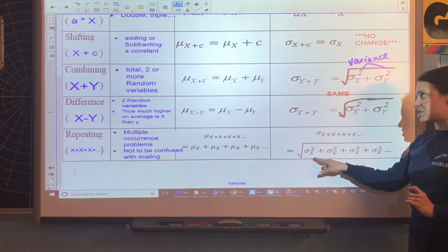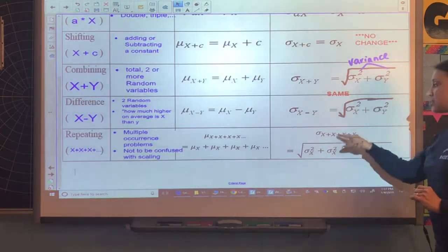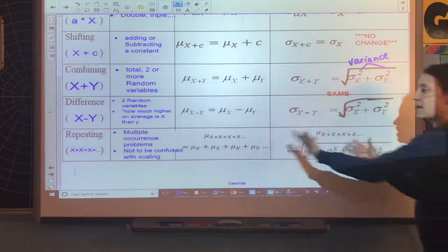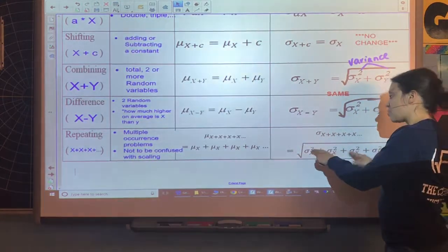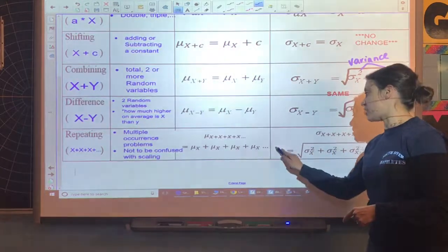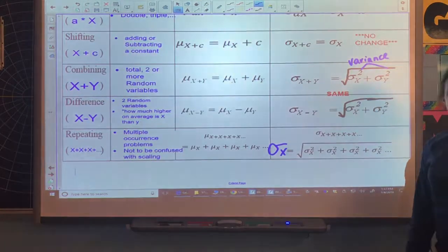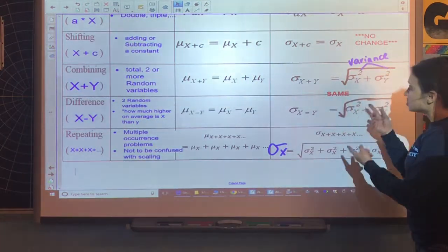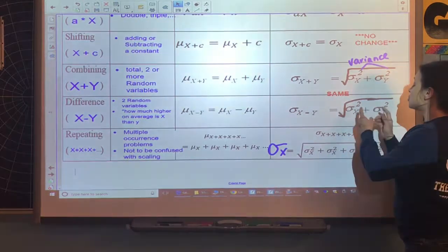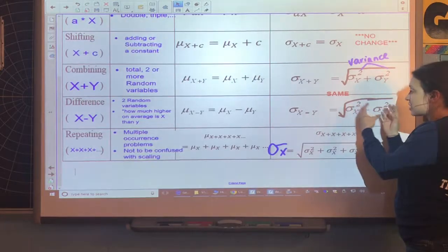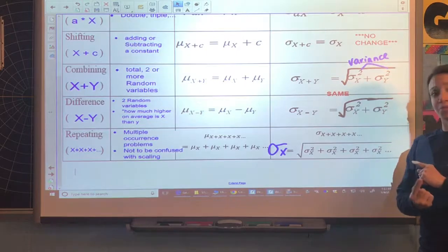But here for standard deviation, I have to take the variance plus the variance plus the variance, however many times I'm repeating this event. Notice it is addition, but it's the addition of the variance. Then the last step will be to find the standard deviation by taking the square root. The reason you have to use variance is because of the order of operations. I have to add these variances together and then undo the square rooting. I can't go in the opposite way.